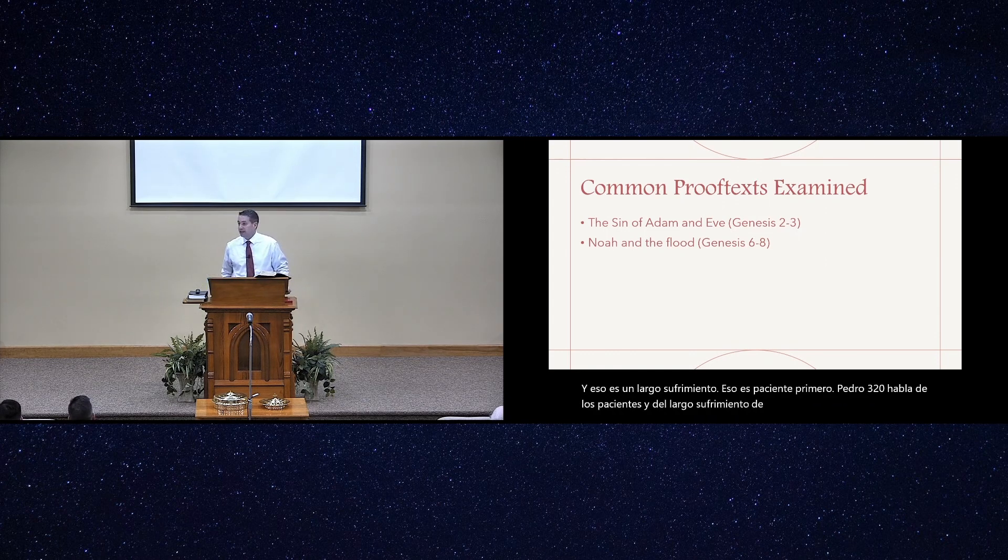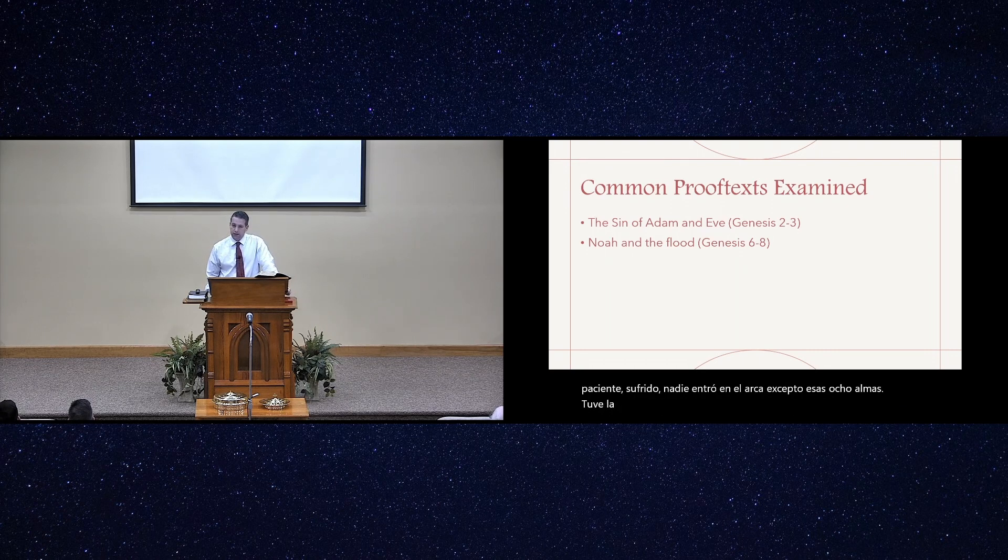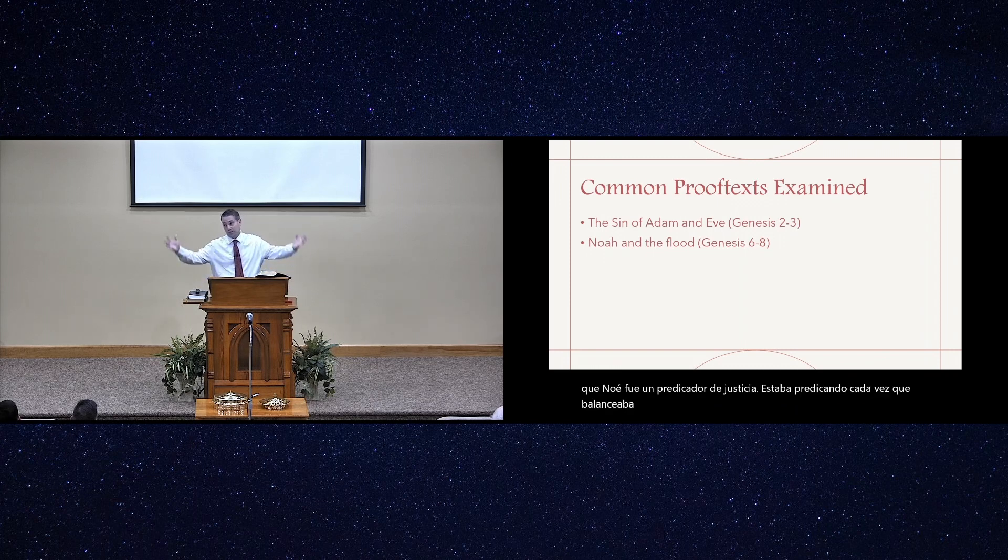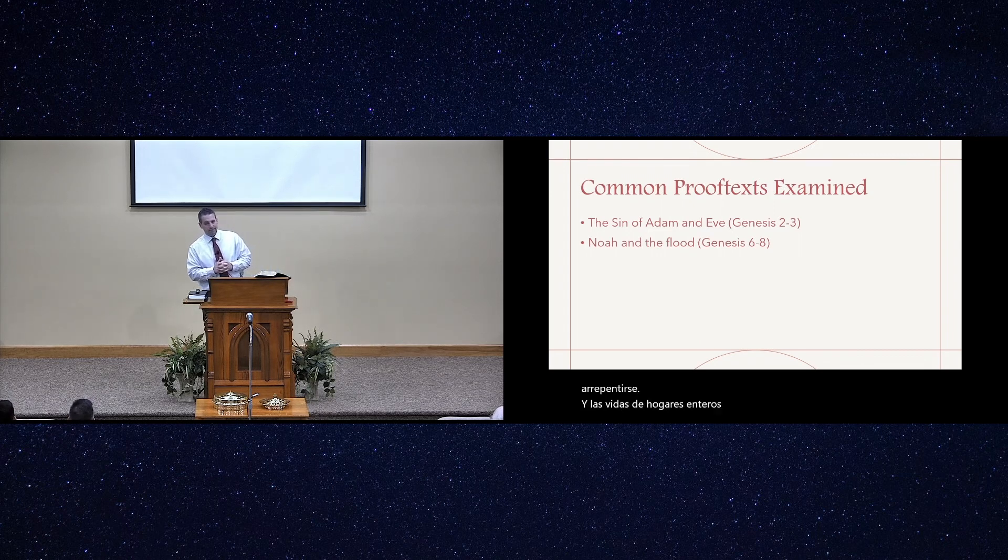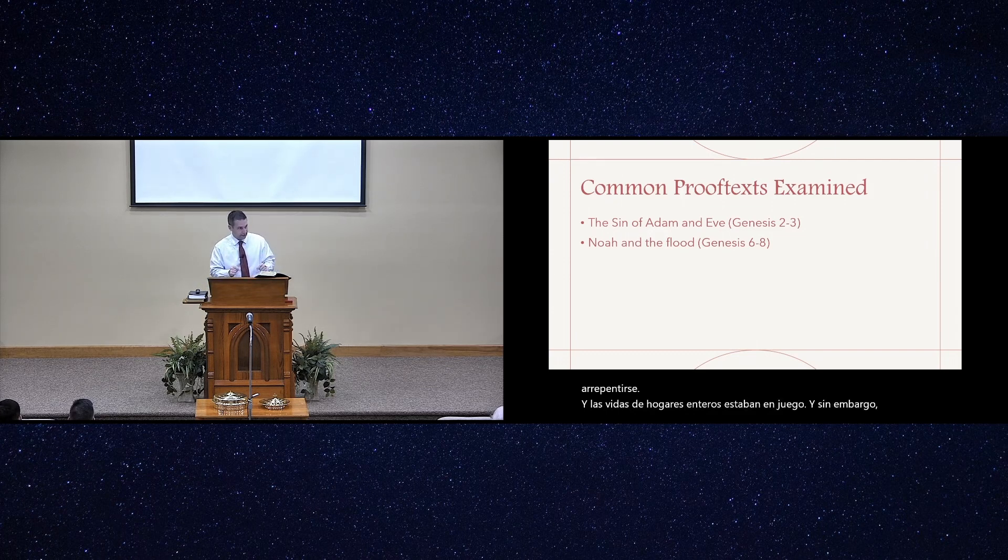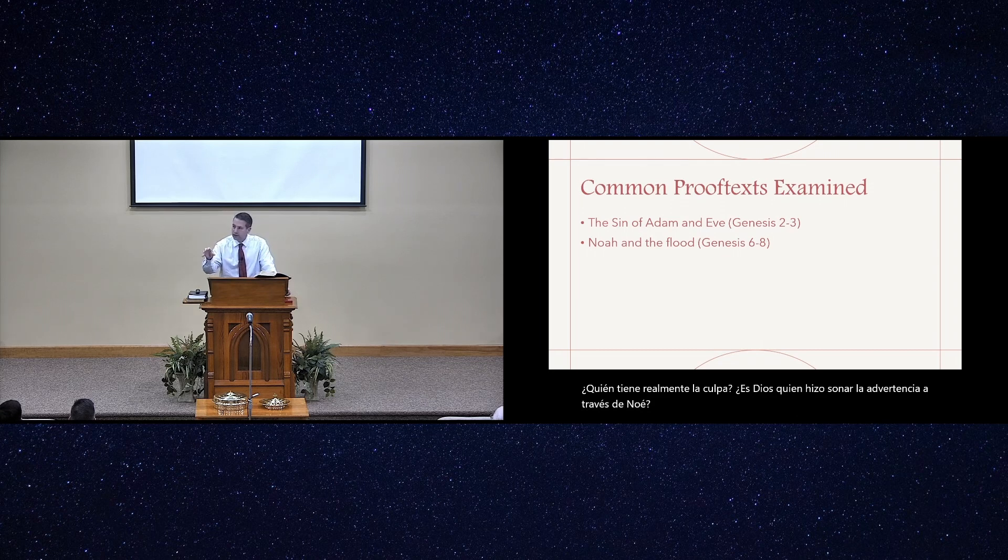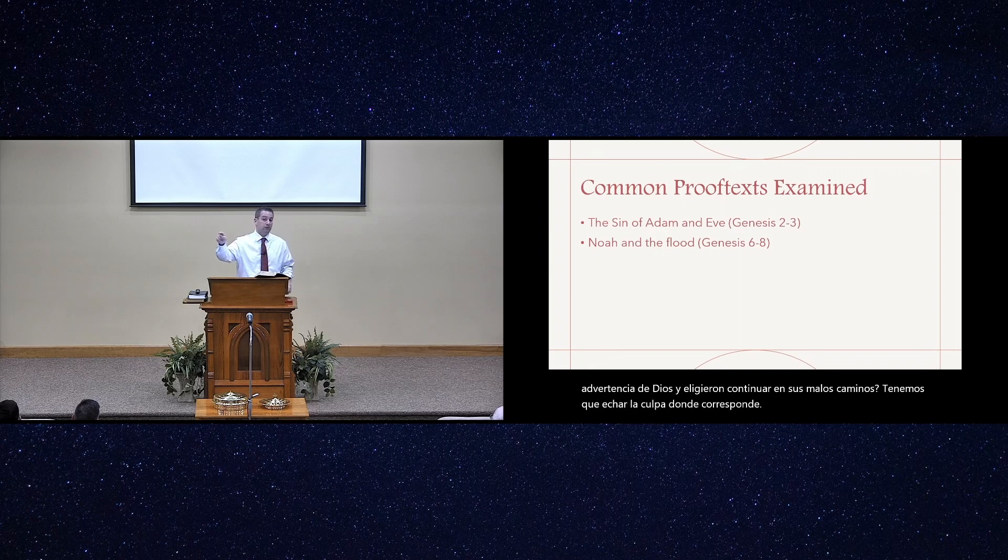In Genesis chapter 6 verse 3, the Lord said, My spirit shall not strive with man forever, yet his days shall be 120 years. That's pretty merciful, pretty kind, pretty patient. 1 Peter 3:20 talks about the patience and the long-suffering of God. But even though God was patient and long-suffering, no one got in the ark except those eight souls. The Bible even says that Noah was a preacher of righteousness. He was preaching every time he swung the hammer. No one was listening. If all these families had 120 years to repent, who is to blame? Is it God who sounded the warning through Noah? Or is it the parents who ignored God's warning calls?